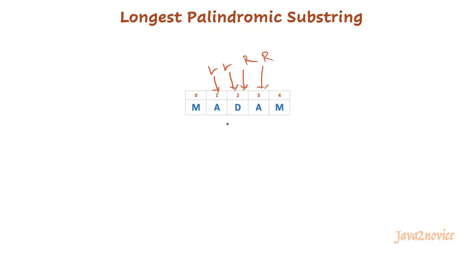Notice here, this input string has an odd number of characters — the length is odd. So it is easy to identify the mid position; index 2 is the mid position. What about an input string with an even number of characters? How can we find the mid position?